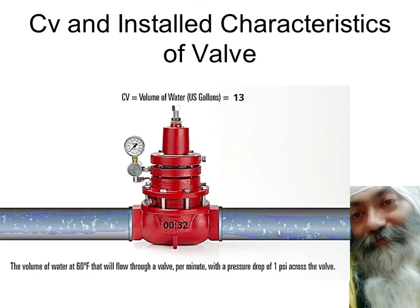For example, here you see once again: the volume of water at 60 degrees Fahrenheit that will flow through a valve per minute when the pressure drop is 1 psi. In this particular case, the CV comes out to be 13. It means 13 gallons of water will flow per minute through this valve at this opening when it produces a pressure drop of 1 psi.